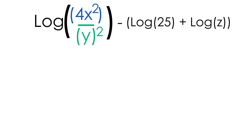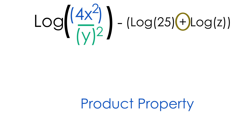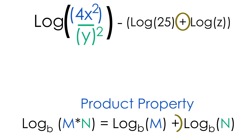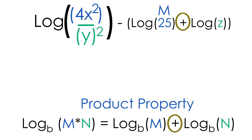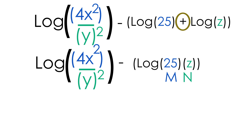Now let's simplify this parentheses even further. We have 2 logs with a plus sign in the middle, which is a clear indication that we need to use the product property. The product property says that if we have the log of m plus the log of n, we can rewrite them as one single log using multiplication. So log(25) plus log(z) becomes log(25z).